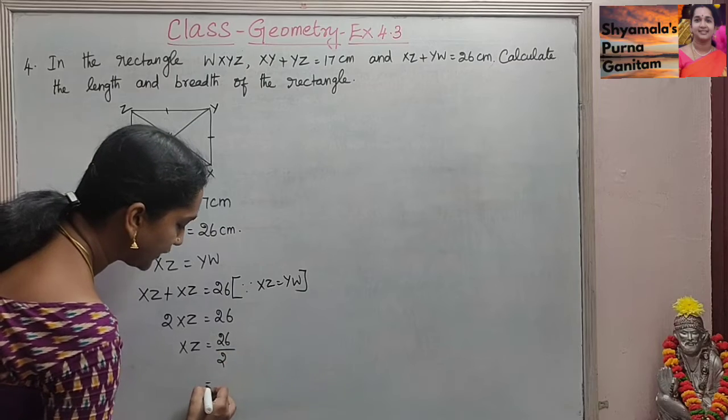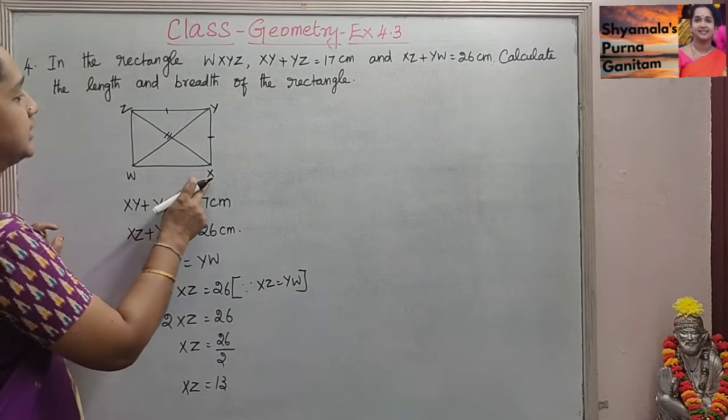So XZ is equal to 26 by 2. That is equal to 13. XZ is 13. This is a rectangle. We will get a right angle triangle here. So X, Y and Z will take a right angle triangle.